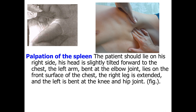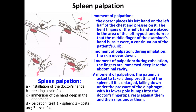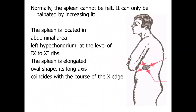For palpation of the spleen, the patient should lie on the right side with the head slightly tilted forward to the chest, the left arm bent at the elbow joint lying on the front surface of the chest, the right leg extended, and the left leg bent at the knee and hip joint. In this position we have maximum opportunity to examine the spleen. Normally, the spleen is not palpable — even detecting the edge of the spleen means a pathological condition called splenomegaly. Normally, the spleen is located in the left hypochondriac region, between the ninth and eleventh ribs.